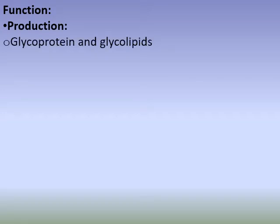The function of the Golgi Complex is production. It produces bulk proteins — proteins are already produced in the endoplasmic reticulum. Lipids are produced in the endoplasmic reticulum. Bulk carbohydrates are also produced here.